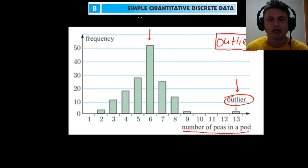Anyway, so this is it for sub-chapter B, simple quantitative discrete data from chapter six. Thank you for watching and good luck to you. Bye bye.